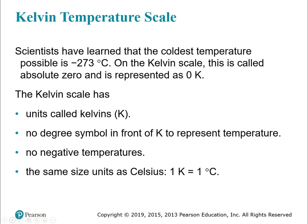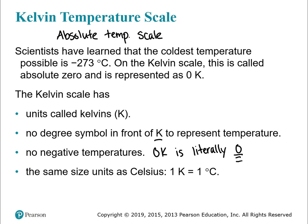Then there's the Kelvin temperature scale — it's an absolute scale with no degree symbol, just the letter K. There's no such thing as negative temperatures on this scale. Zero Kelvin literally means zero — no heat in the system. The unit size is the same as Celsius, so a change of 5°C equals a change of 5 K.